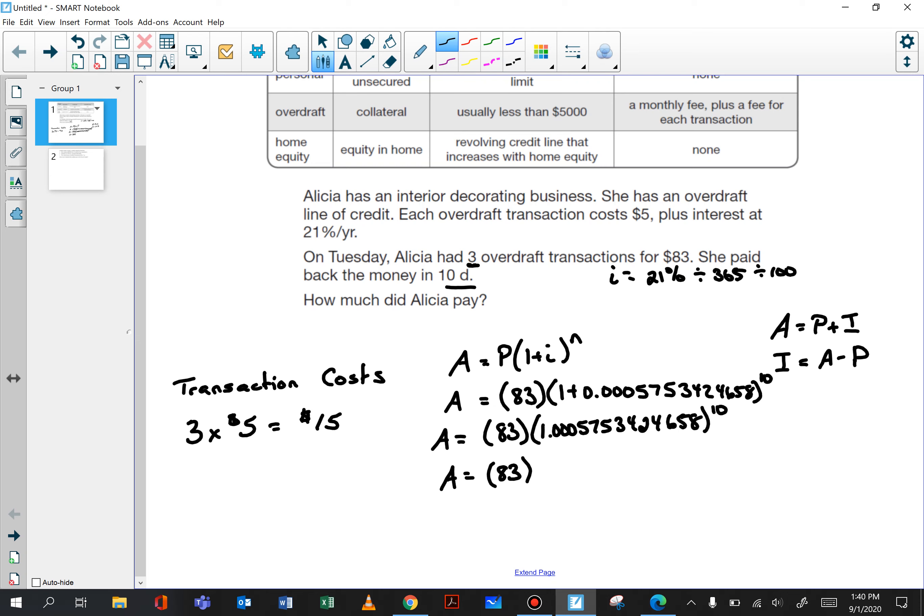A equals 83. So first we calculated what's in the brackets, then we calculate the exponent, and now we can multiply so times 83 is 83.47877725.